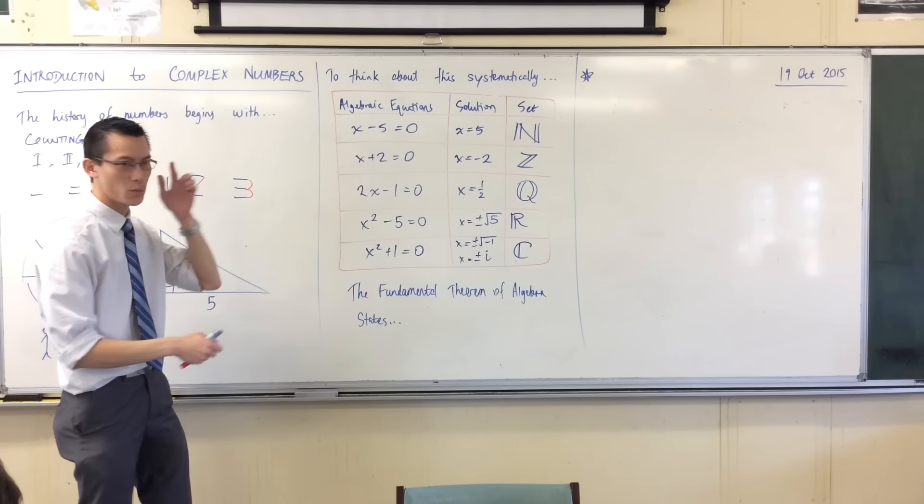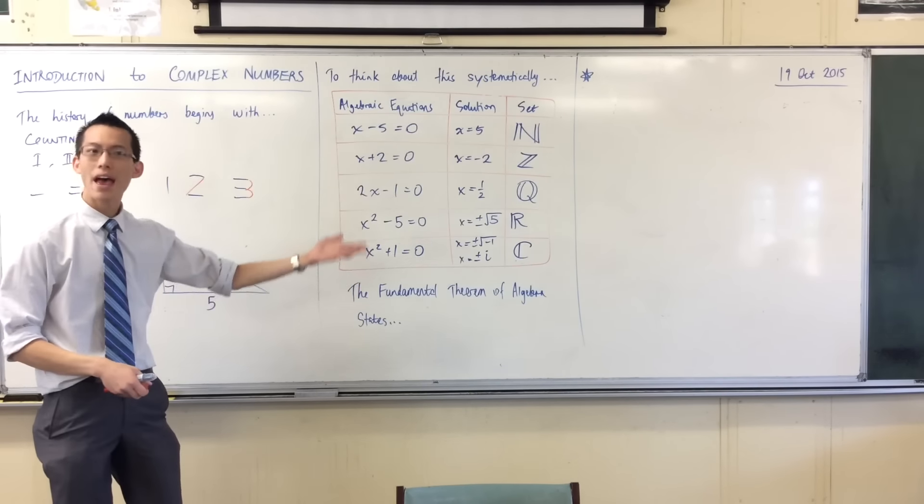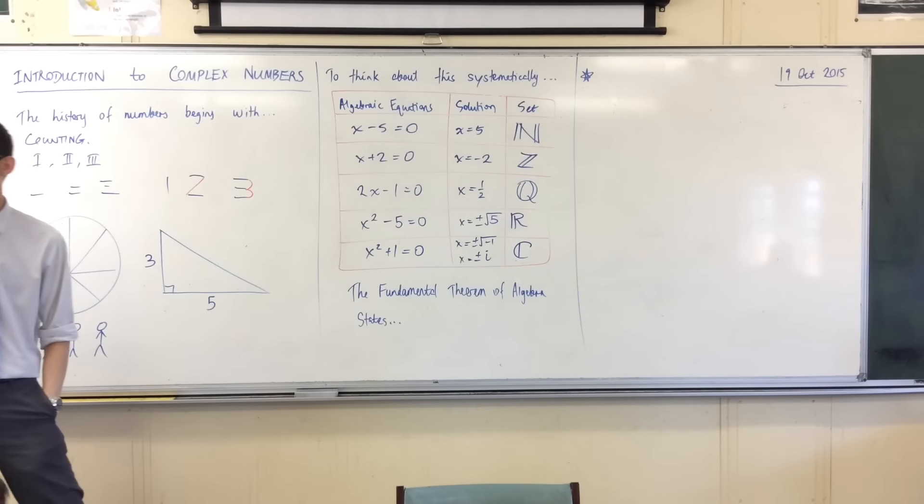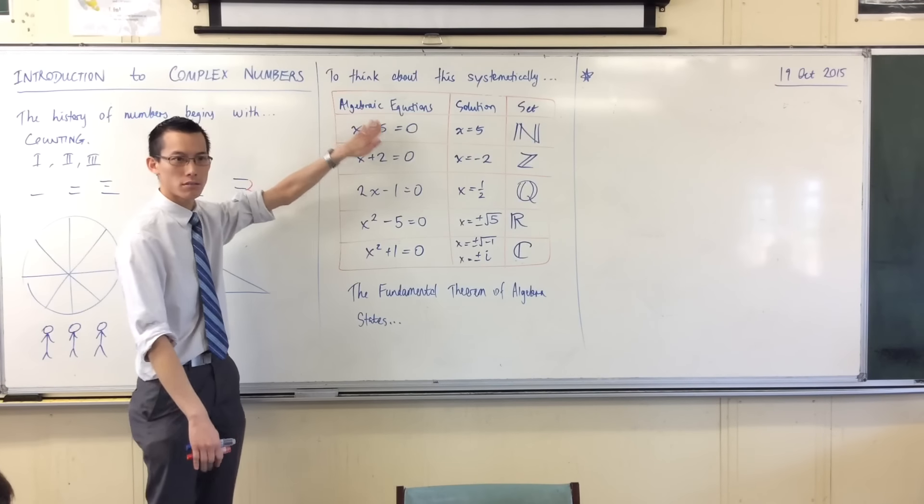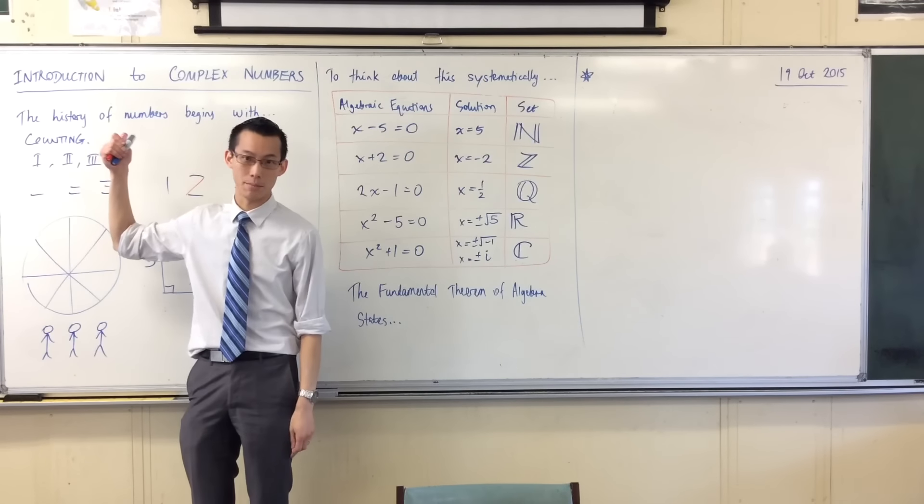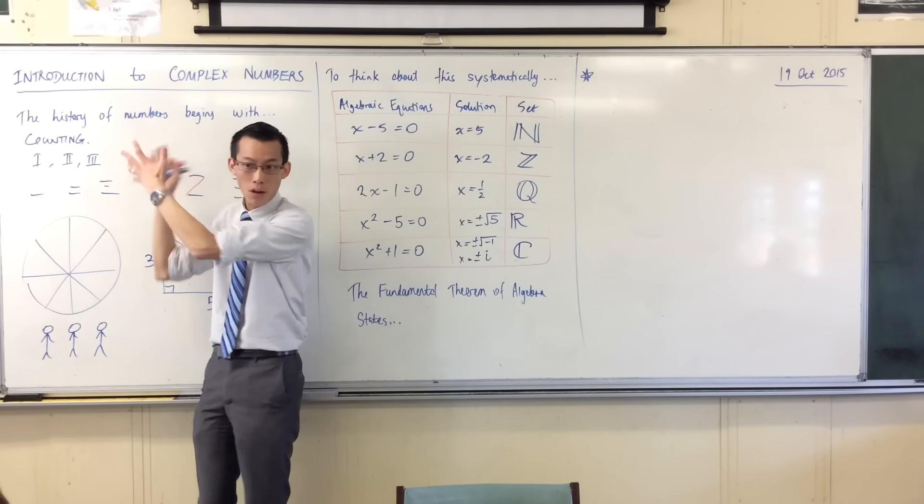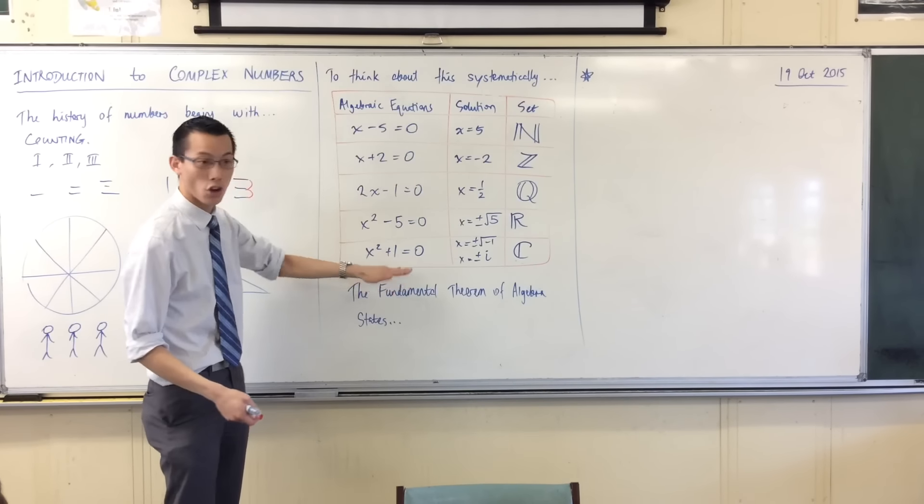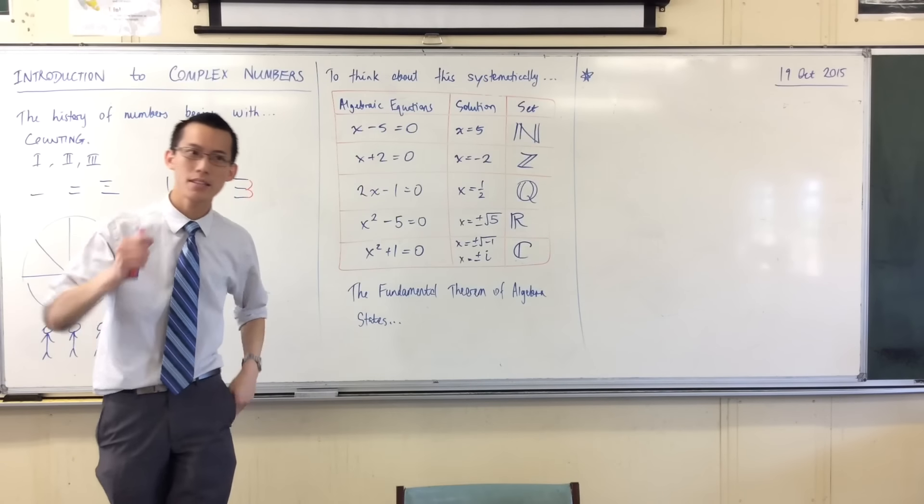Now, here's the really, really cool thing. This is why my table has this many rows and no more. If what you're doing is trying to arrive at numbers by means of algebra and counting numbers, if these are your building blocks and these are your building tools, complex numbers, these are the end of the line.